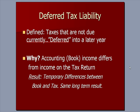What would cause a deferred tax liability? The reason is that accounting or book income differs from the income that you actually put on the tax return. So the accounting records differ from the tax return, and as a result, there's a temporary difference between what we call book and tax — but the long-term result is the same, meaning that eventually it evens out.